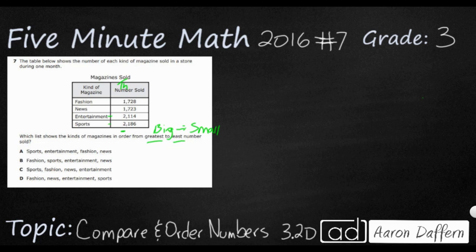Before we figure out which one is first, we need to go to the hundreds column. Focusing on just these two, we see they both have a 1. They both have a 2 in the thousands and a 1 in the hundreds. So we go to the tens column—that's where we get the difference. Sports has an 8 and entertainment has a 1. So sports is first at 2,186. Before we compare the other two, we know entertainment is next at 2,114.